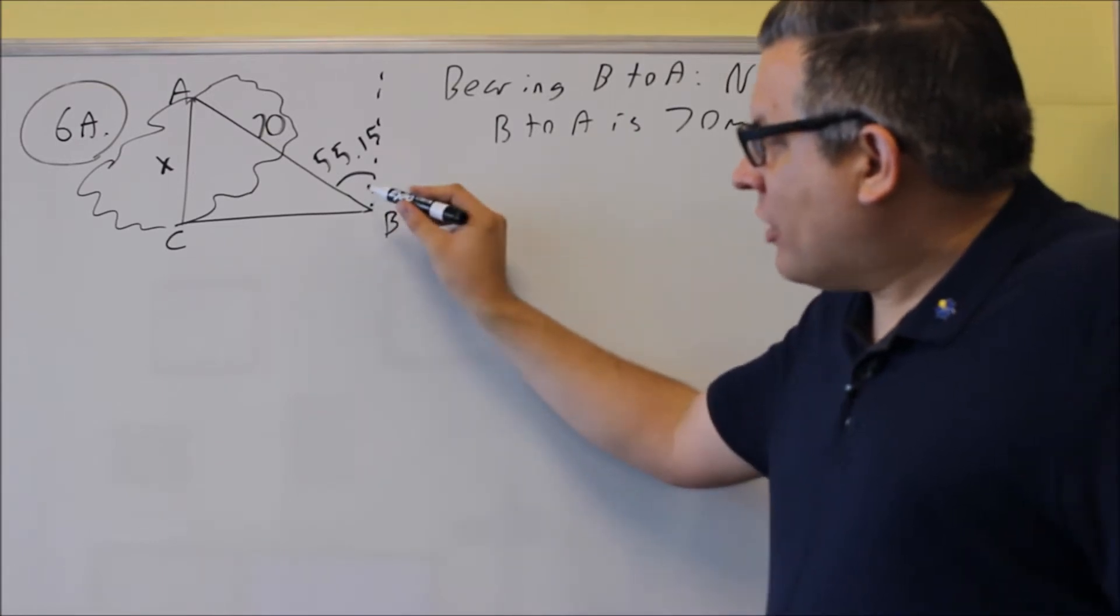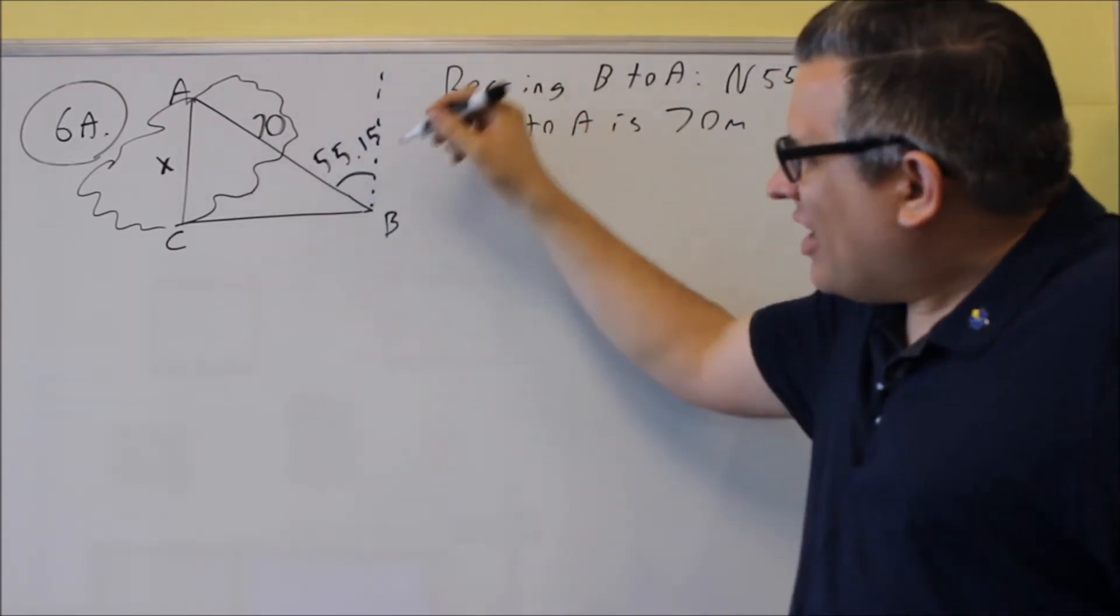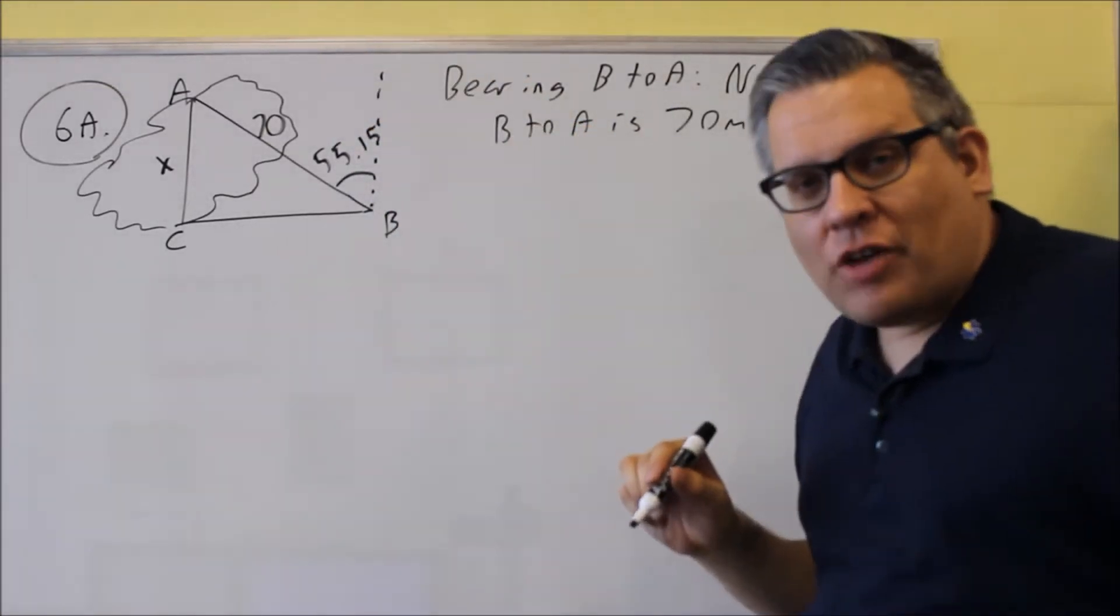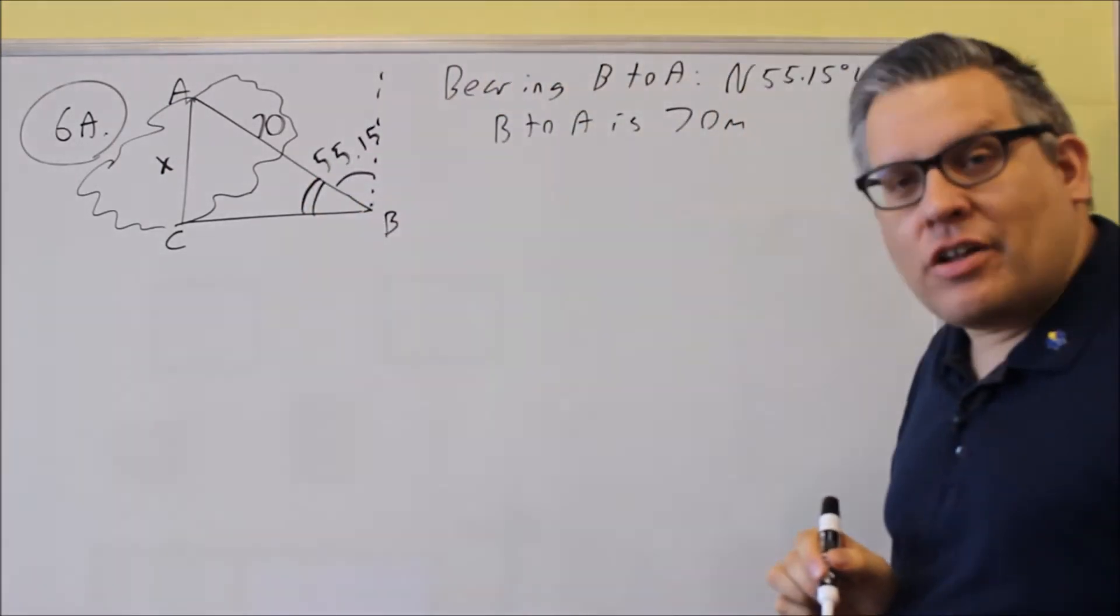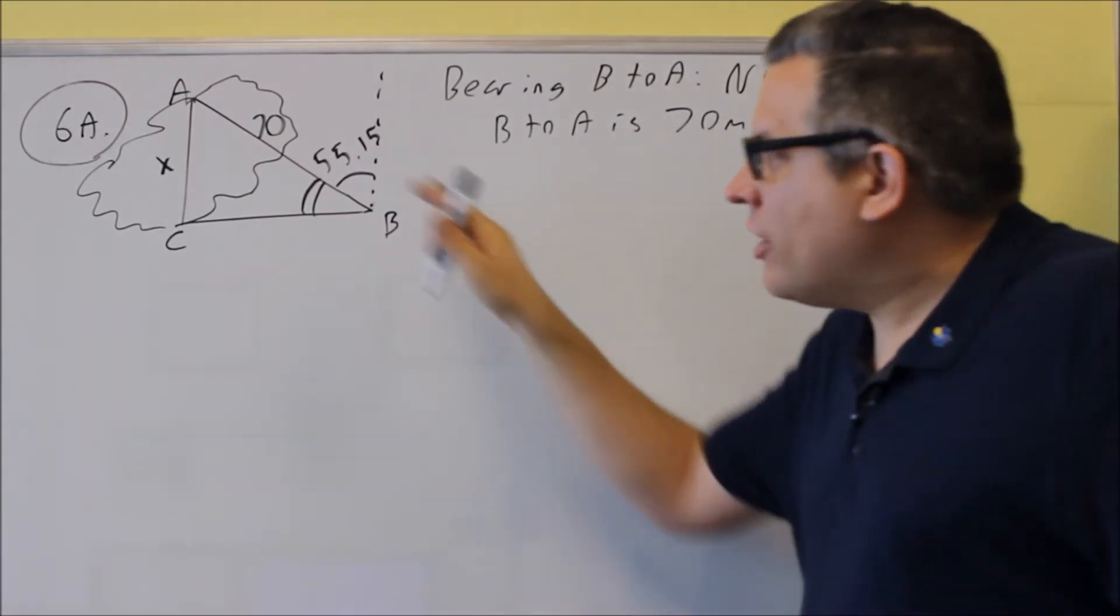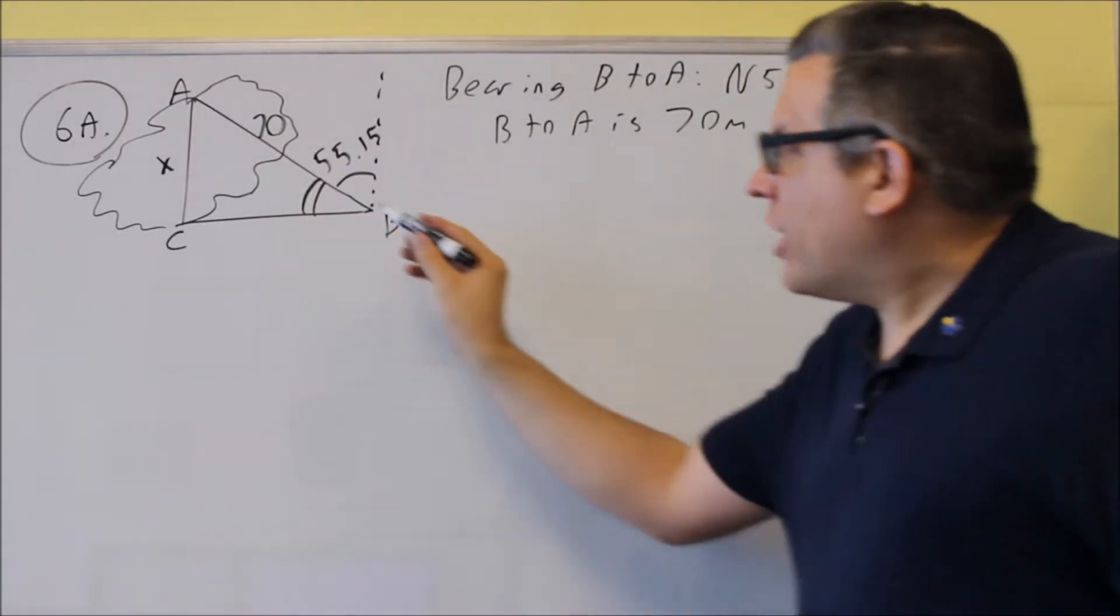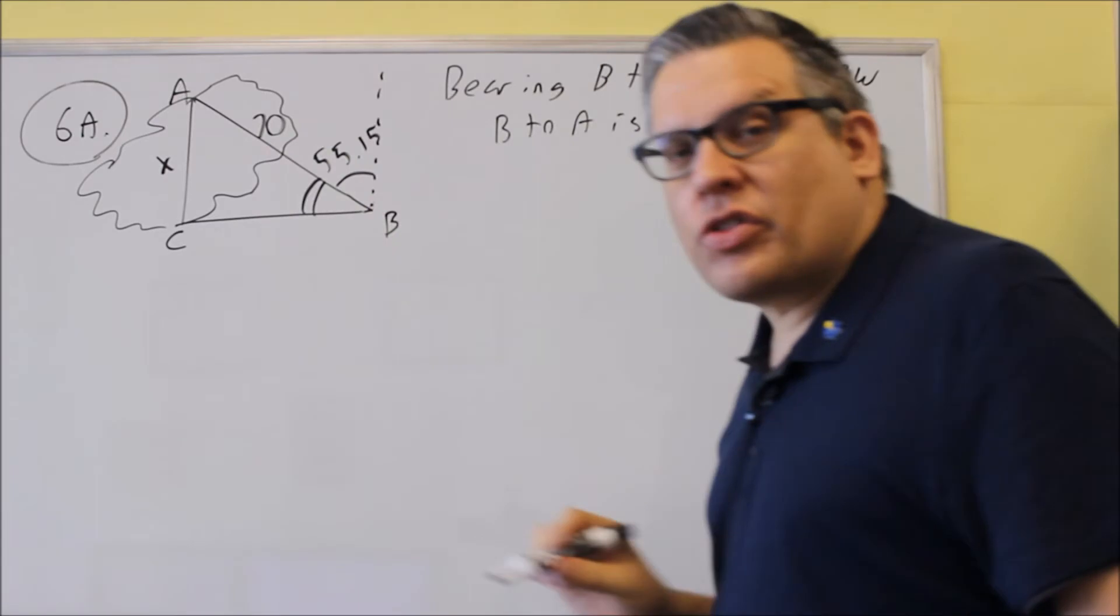We have an angle that we're going to use is actually not going to be 55.15. We need to find this angle inside the triangle. That's the only way the definitions will work. If we try and do an opposite, we have to know what that angle is.